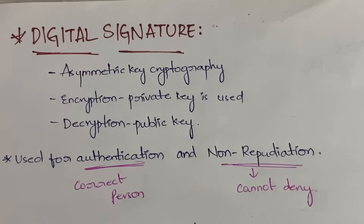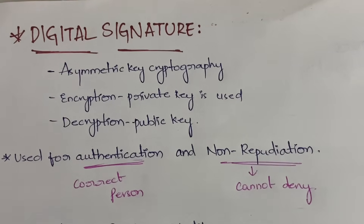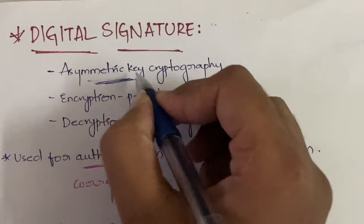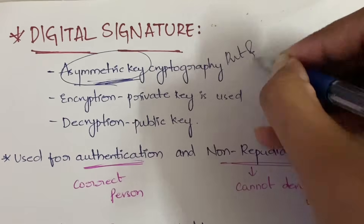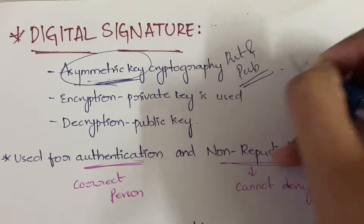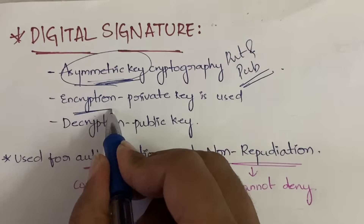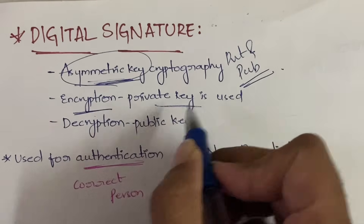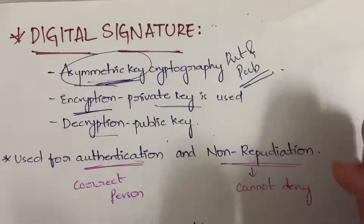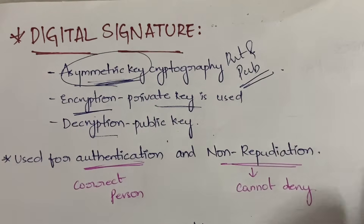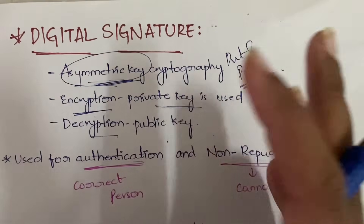Any algorithm or concept we learn in this subject either belongs to symmetric key cryptography or asymmetric key cryptography. Digital signature belongs to asymmetric key cryptography because it uses both private and public keys. At the encryption end you will be using the private key, and at the decryption end you will be using the public key.